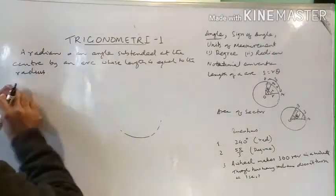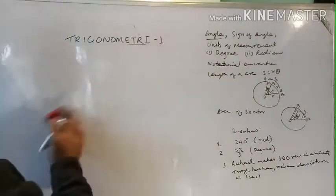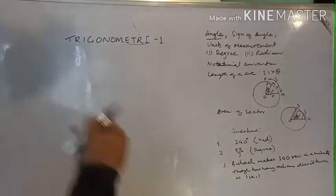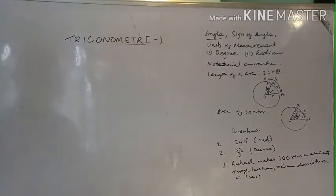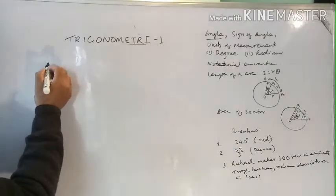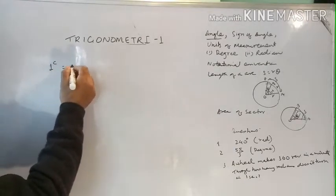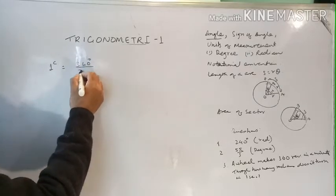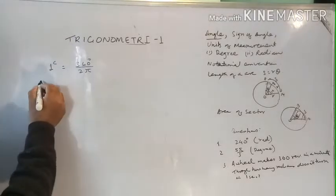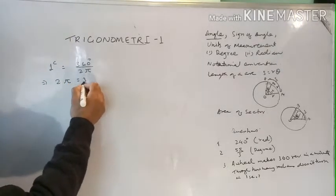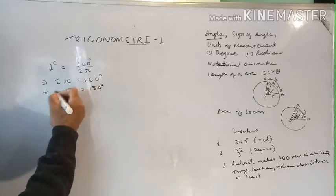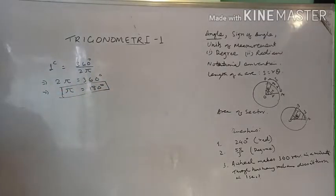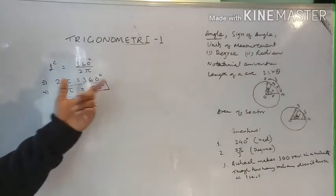Now let's find the relation between degree and radian. We just derived that 1 radian equals 360 degrees divided by 2π. This means 2π equals 360 degrees, which implies π radian equals 180 degrees. Remember this: π radian is equal to 180 degrees. This is the fundamental relation between radian measure and degree measure.